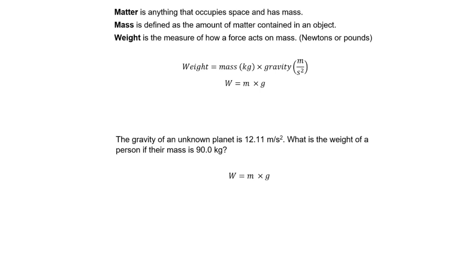The first thing I want to check are my units. My gravity was given to me in meters per second squared, that matches, and my mass was given in kilogram, which also matches. Plugging our numbers in, we are simply going to take 90 and multiply it by our 12.11. Our final answer is 1090 newtons.